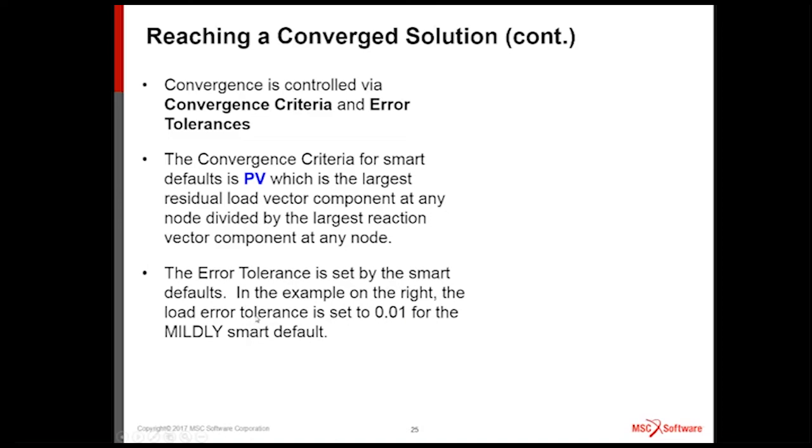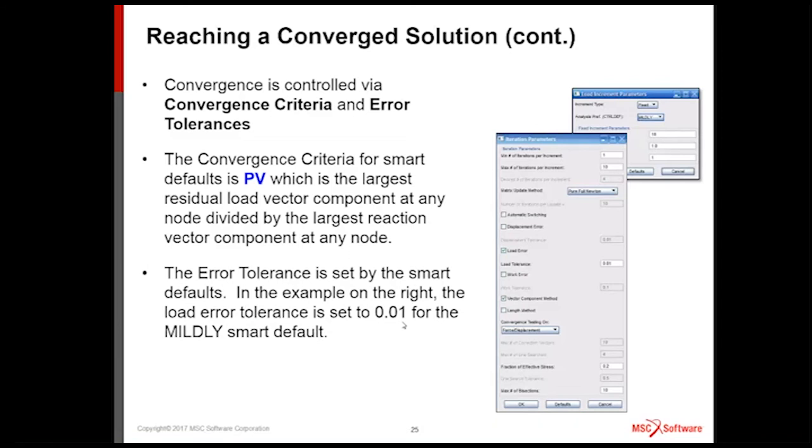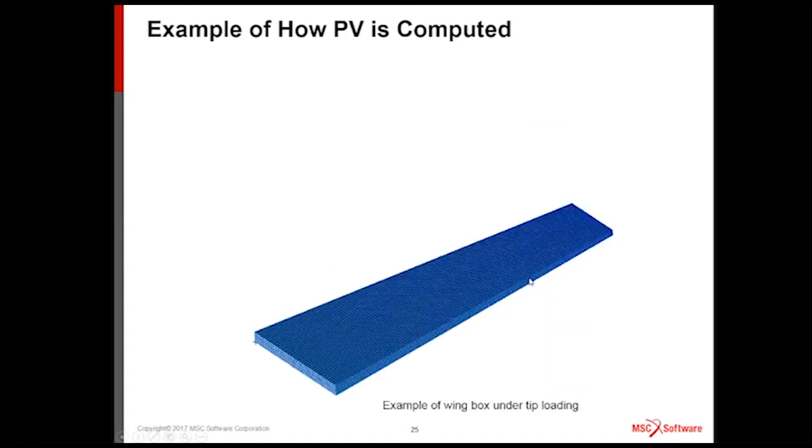For example, in the mildly nonlinear example, we set the PV to 0.01. So that's 1%. That means when you take the largest load residual unbalanced load component divided by the largest reaction component, it cannot be larger than 1%. Again, this is where you see those choices selected in Patran. So let me show you an example. People often ask, what exactly is Nastran calculating? What is that PV? Let me show you. Here's an example of a wing box. So I have on the left-hand side a fix. And on the right-hand side I have a shear loading at the wing. So it's bending this upward.